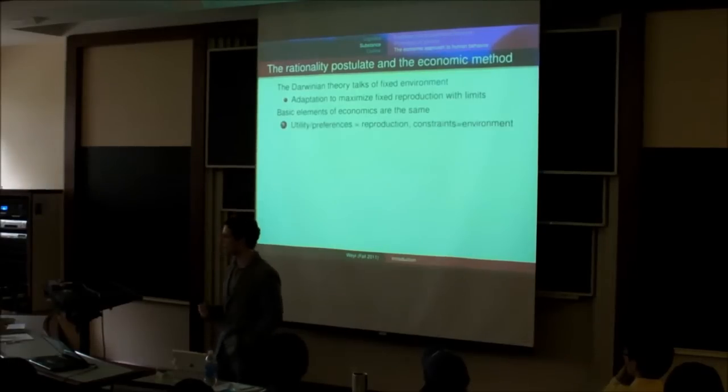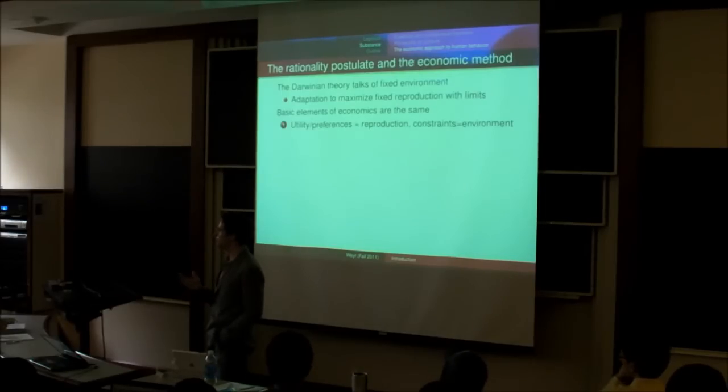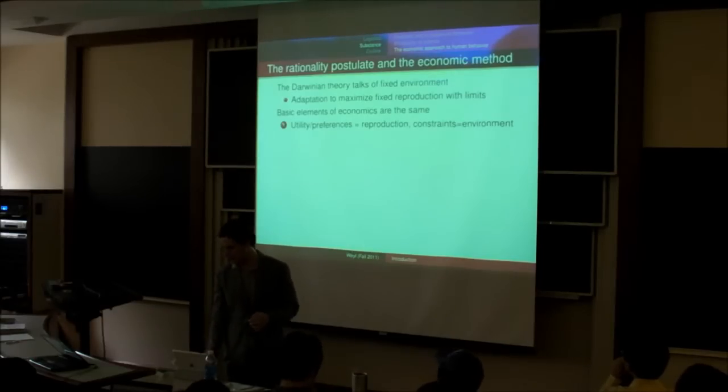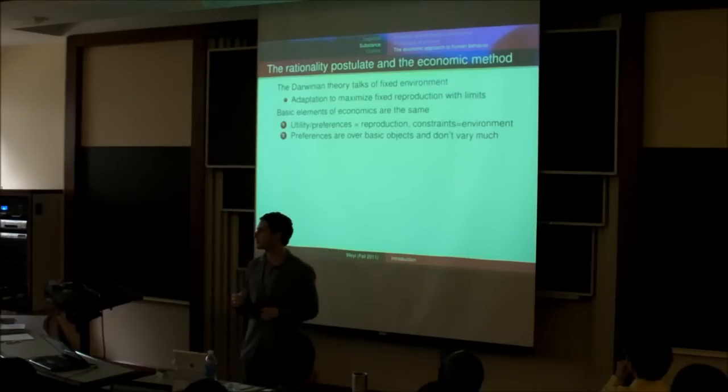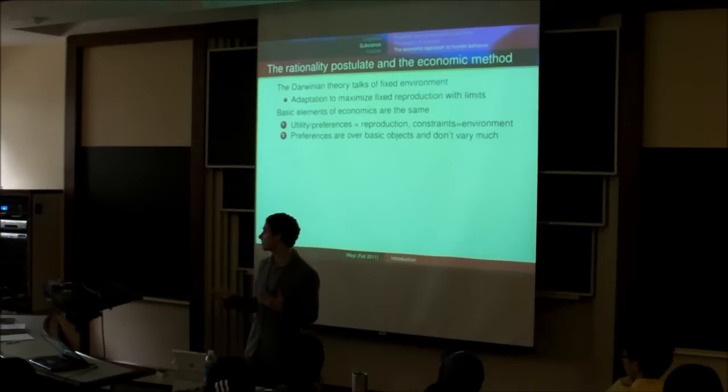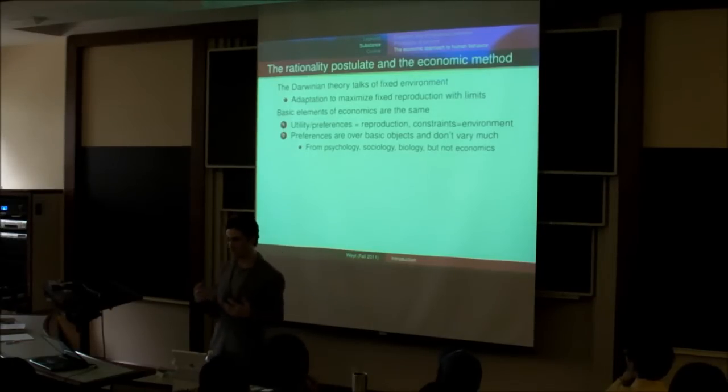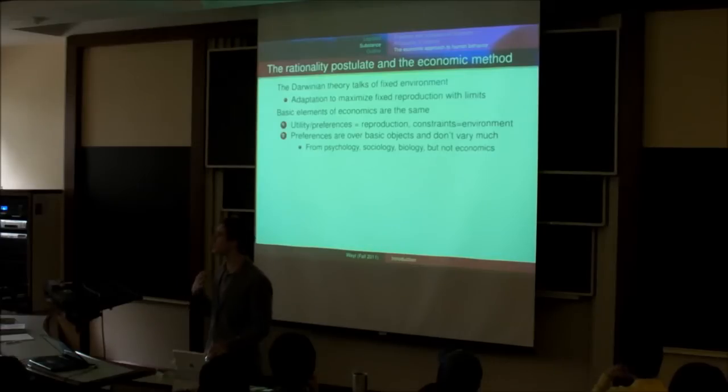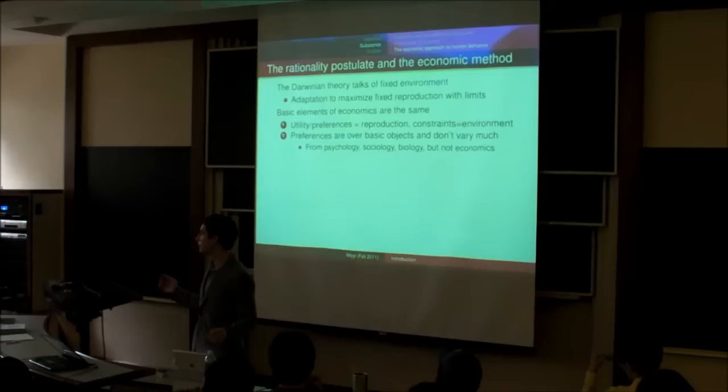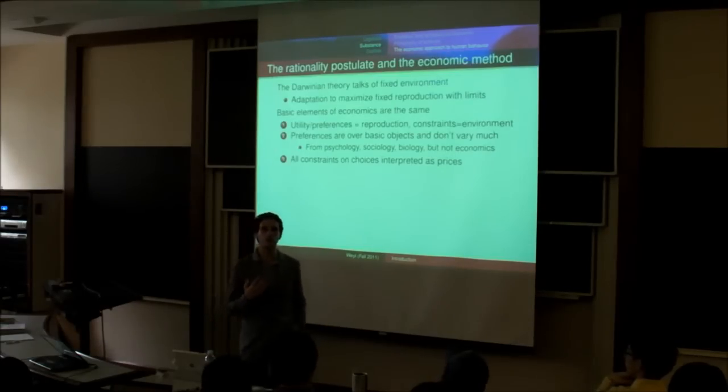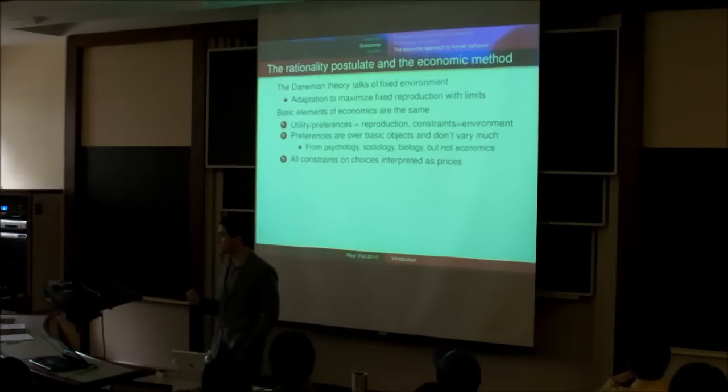So economic analysis says that there's these things called utility or preferences, which in biology are basically the fitness of the animal, how much it reproduces. And then there are constraints, which are basically like the niche or environment in which the animal finds itself. And these preferences are assumed to be basic and not to vary too much across people, just like the necessity for reproduction doesn't vary much across different organisms. And these come not from economics, but from things like psychology, sociology, biology. We, as economists, don't spend much time analyzing what preferences people have or how they would trust people. Instead, we take these as given facts from sort of other fields.